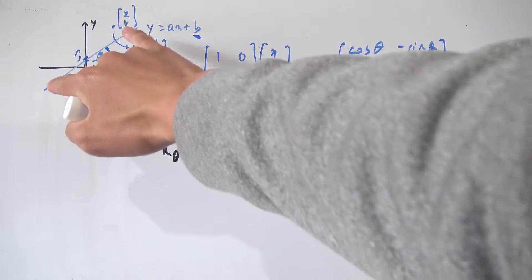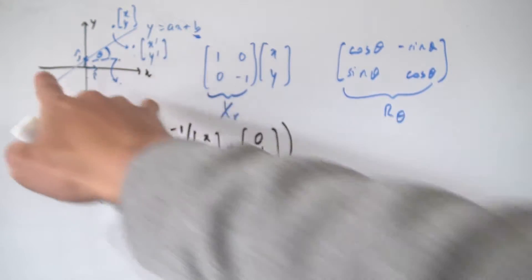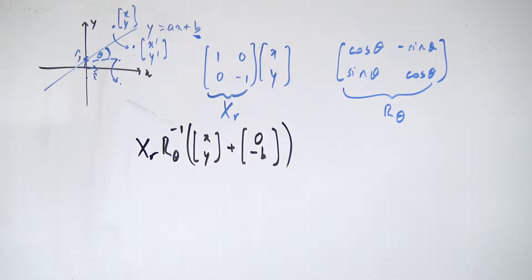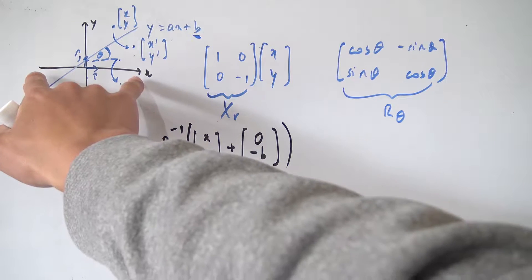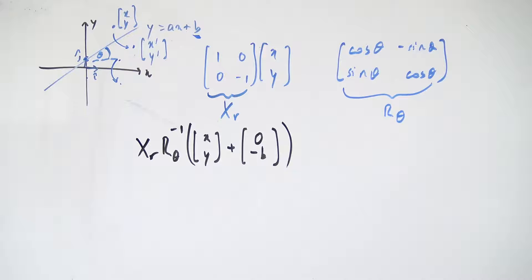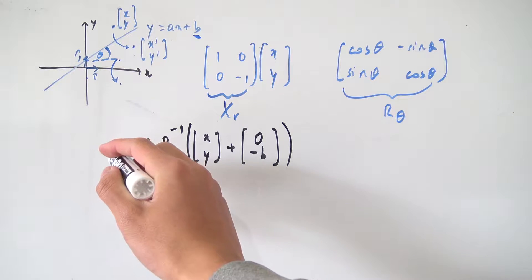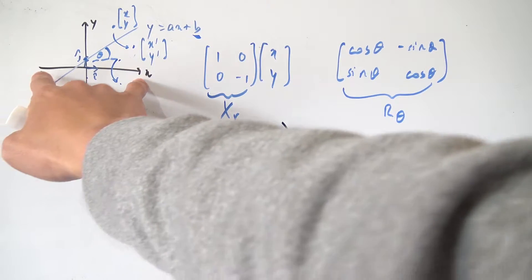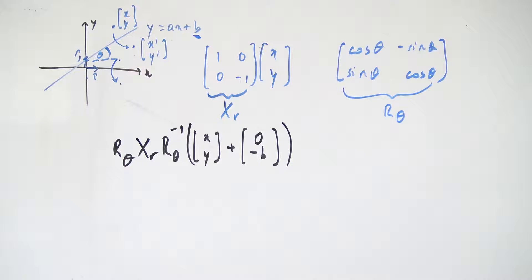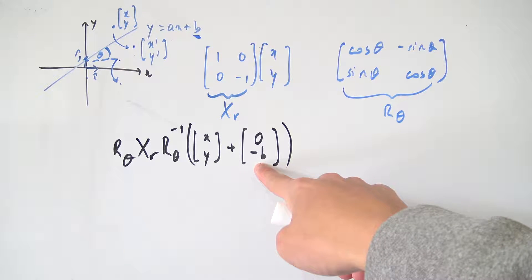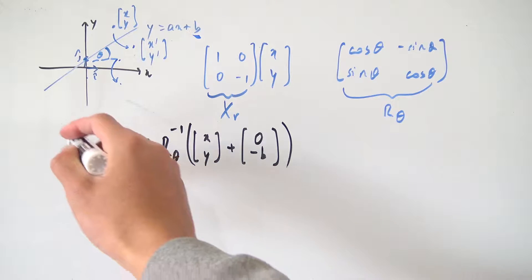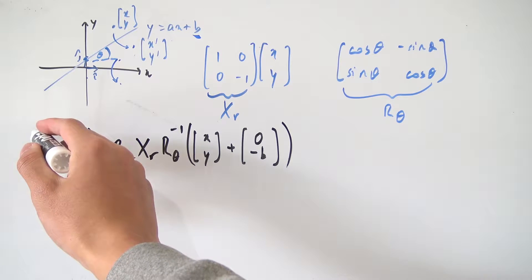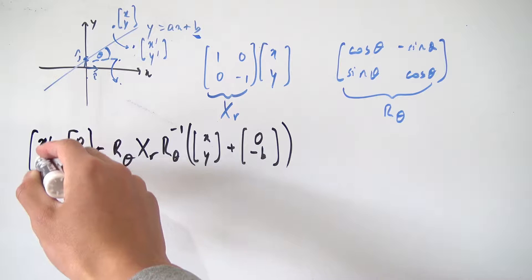Since this whole reflection line is now on the x axis, we can apply our x-axis reflection matrix Xr. Once everything has been reflected on the x axis, we need to move everything back to where it was originally. First, we need to rotate everything back using R(θ). And then, since we moved everything down by b, we also need to add (0, b) to move everything up again.